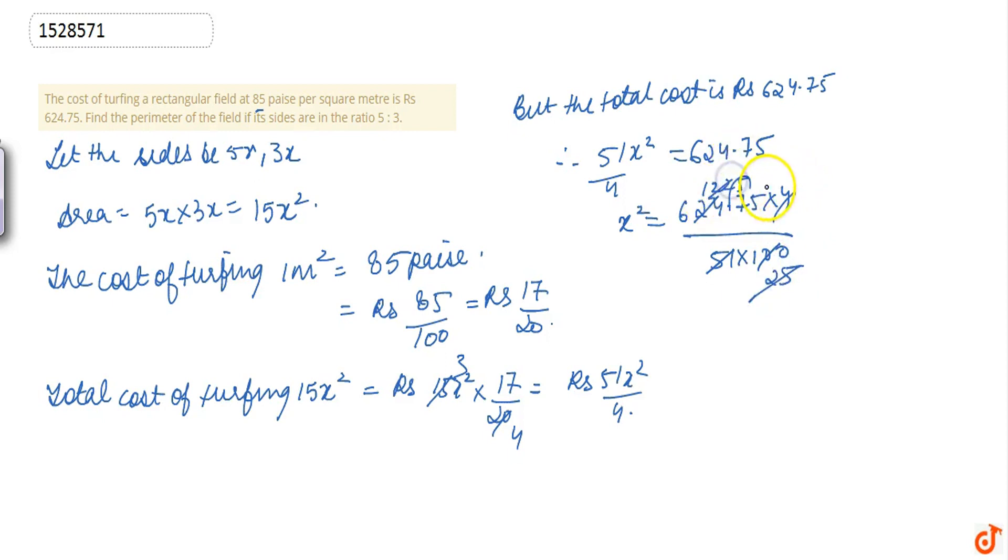1225 cut jayega 49 se. So, x square equals to 49, and x equals to under root of 49, that is 7.